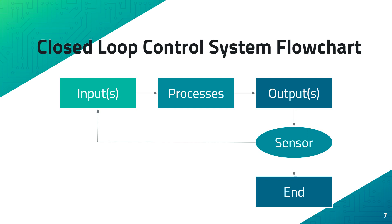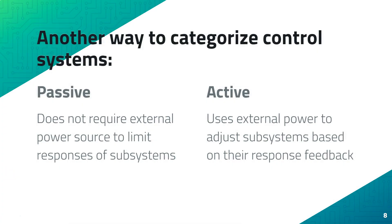Another set of categories would be passive and active systems. Passive control systems don't need an external power source to limit subsystem responses, while active systems use external power sources to adjust subsystems based on the response feedback.